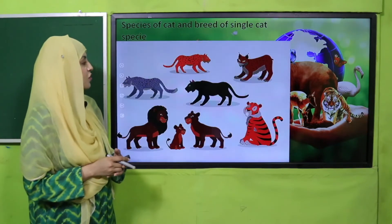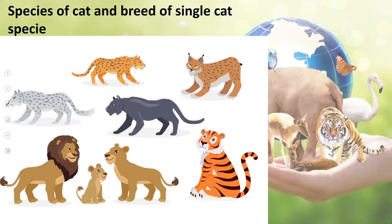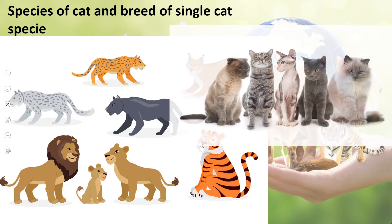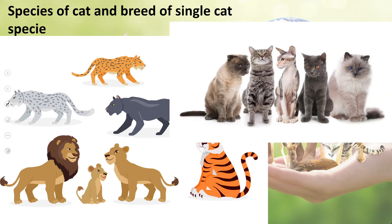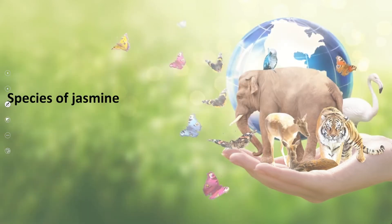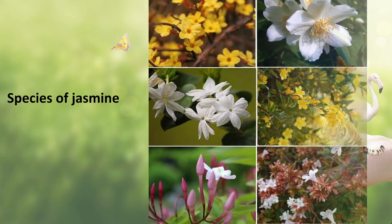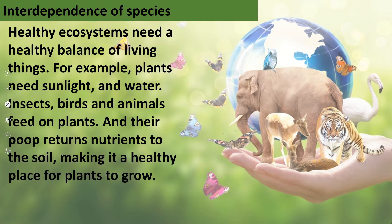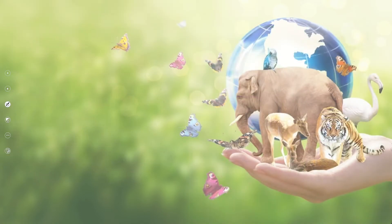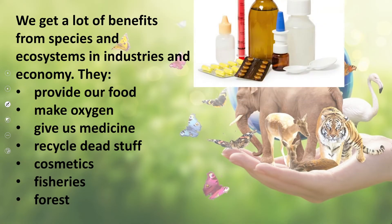You can see species of cats and breeds of a single cat species — they are of different types. Within one animal there can be so many species with different features — the size, the fur, the type — they are different kinds. Similarly, species of jasmine: you can see different types of jasmine flowers, different in structure, color, and habitat. Then comes the interdependence of species — species depend on each other to create the ecosystem, and if any one species is disturbed, the whole ecosystem is negatively affected.